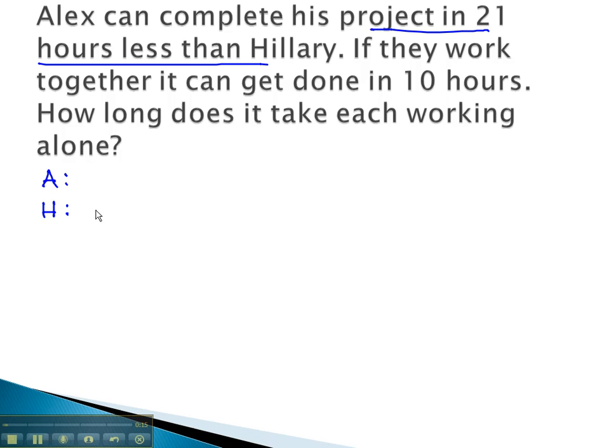We aren't given any information about Hillary, so we'll make her our unknown, x. Alex doing the job in 21 hours less would be x minus 21. We're also told, as a team, they get the job done in 10 hours.